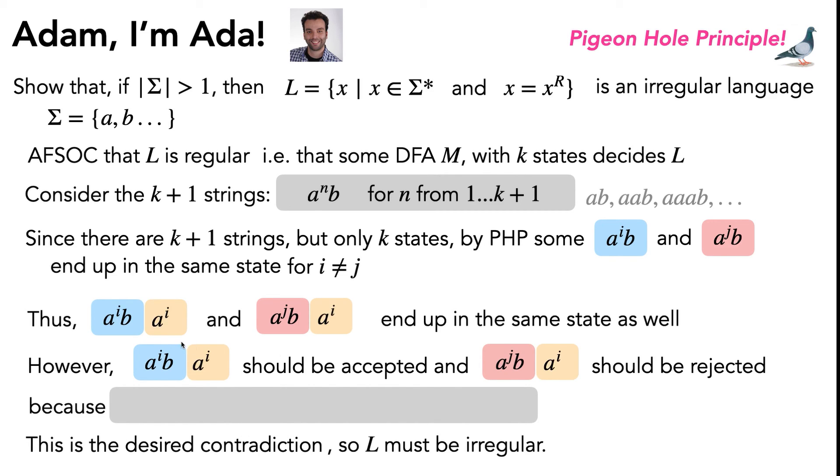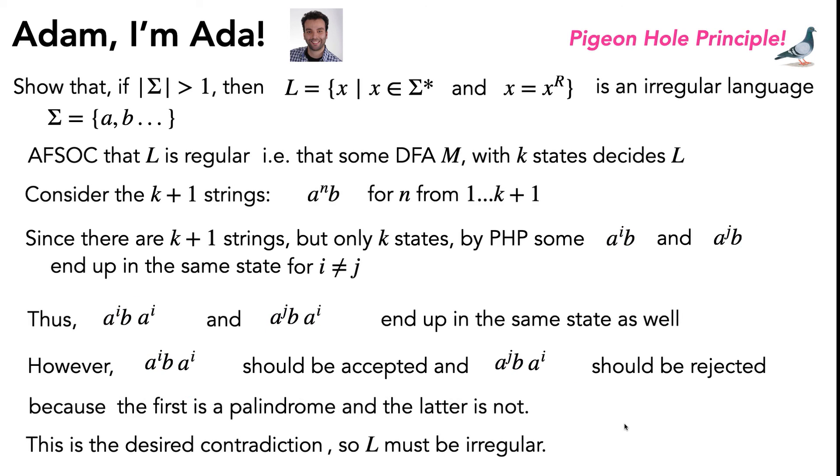Okay, so it should be a^i. So the reason it's a to the i is because this ensures that this string right here is a palindrome and this one is not a palindrome, which ensures that this one is accepted and this one is rejected. And once you've completed all of that out, your final proof looks something like this.